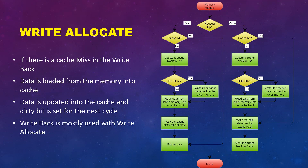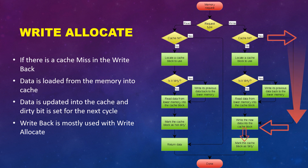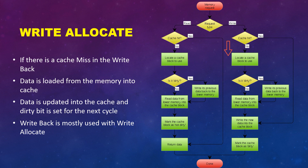In write allocate, the data is loaded from memory into cache and then updated in the cache. The dirty bit is set so that the next cycle can get a cache hit and the memory can be updated with new data. Looking at the diagram: on a cache hit, the data is written to the cache and the dirty bit is updated. On a cache miss, it first locates a cache block for this purpose. If the block is already dirty, the previous data is written to its respective memory, and then it copies data from memory to that cache block. If the block is not dirty, it copies the data from memory to cache, updates the data, and sets the dirty bit so the next cycle updates the memory. In STM32, the write-back policy is mostly used with write allocate.